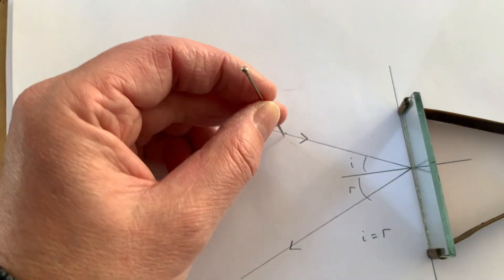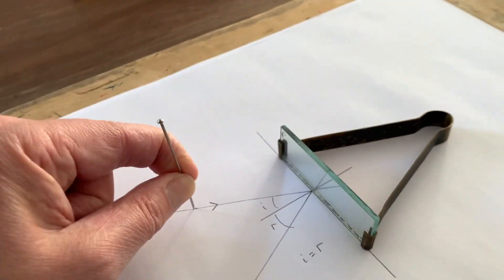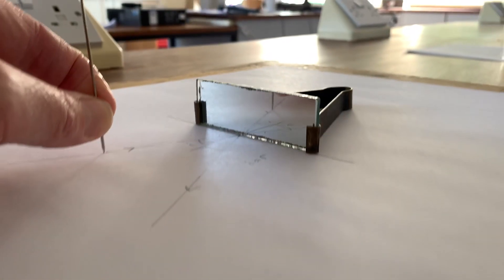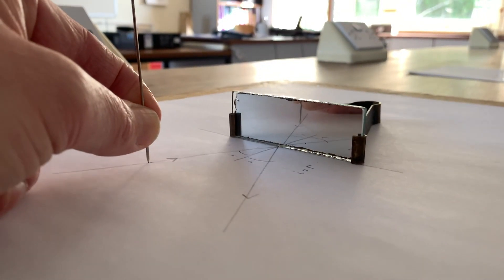When an object is placed in front of the mirror, this principle means that an image of that object will be formed in line with the reflected ray.